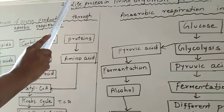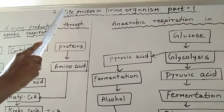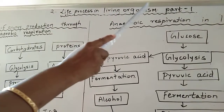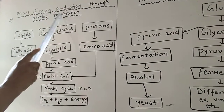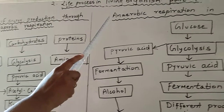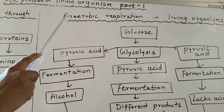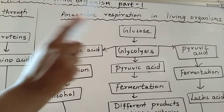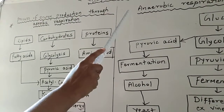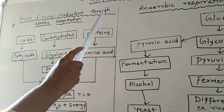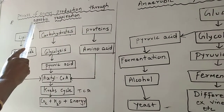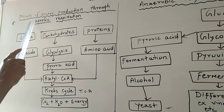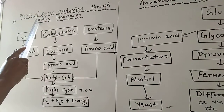Hello students, let's continue with the further topic of our life processes in living organisms part 1. Today we are going to study about the process of energy production through aerobic respiration, and also the process of energy production through anaerobic respiration in living organisms. In my earlier video we had taken information about cellular respiration. Now let's continue how the process of energy production takes place with the help of aerobic respiration.